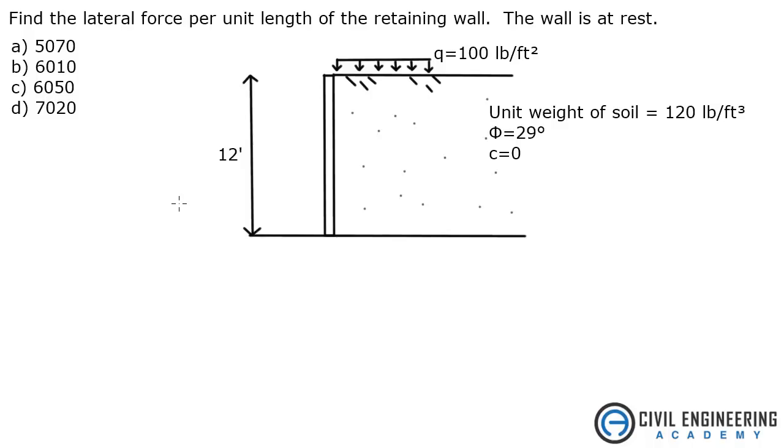The problem states find the lateral force per unit length of the retaining wall. So it must be pounds per foot. The wall is at rest. We're given a Q, which is a surcharge load, like a car or something, distributed load of 100 pounds per foot squared. Unit weight of the soil is 120 pounds per cubic foot, 29 degrees is the friction angle, and cohesion is zero. There's our wall, 12 feet in depth.